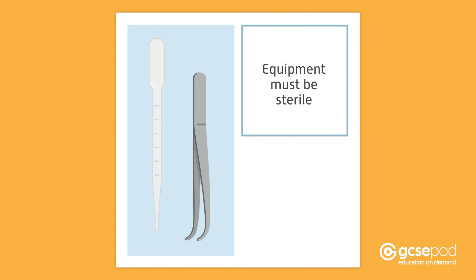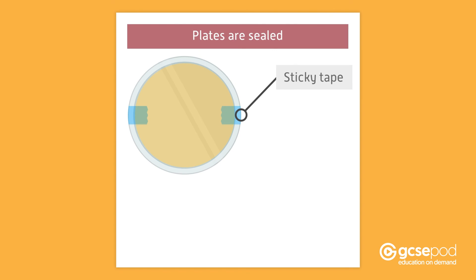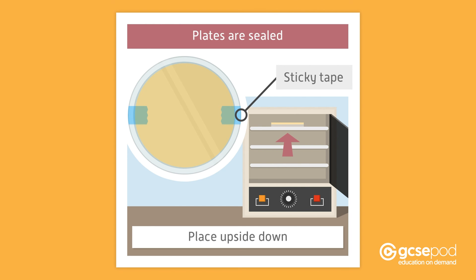Any equipment used, for example a pipette and forceps, must be sterile before use. The neck of the culture bottle is also sterilised before use by passing it through a blue Bunsen burner flame. The plate is placed under a lit Bunsen burner and the lid of the dish only opens slightly on an angle before being replaced as quickly as possible. The plates are then sealed using small pieces of sticky tape and placed upside down in a warm place such as an incubator.